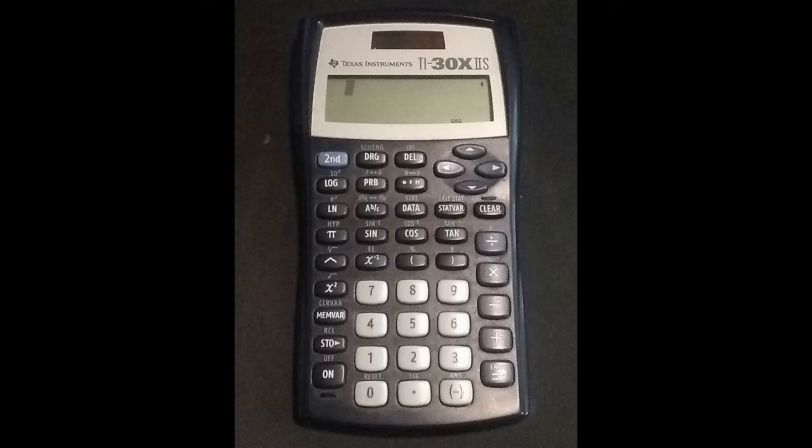A good middle ground calculator would be a scientific calculator, something like the TI-30X. These calculators might cost as much as $20 or $30, but I've seen them at certain stores for as little as $5.